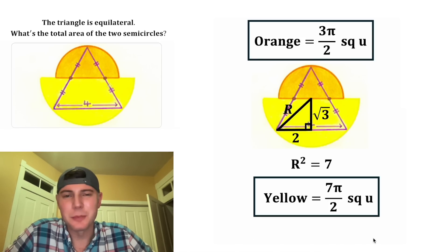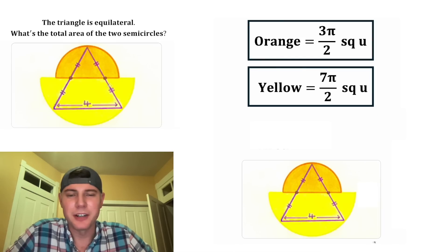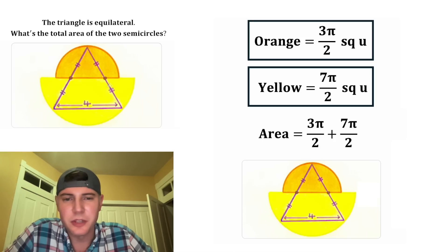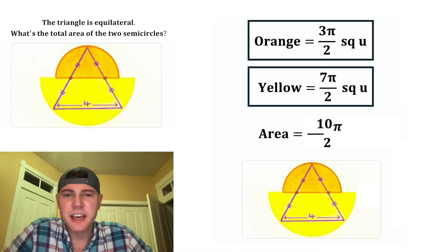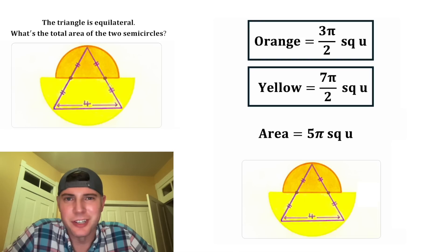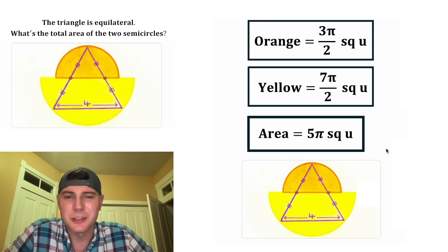Now let's use our two boxes to find the total area. It's the orange area plus the yellow area. Since we're adding two fractions with a common denominator, we can make them a single fraction. Three pi plus seven pi equals ten pi. Ten divided by two is 5. The total area equals 5π square units. This is the answer to our question. Let's put a box around it. How exciting.